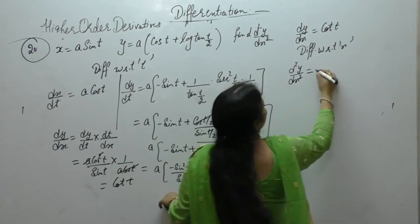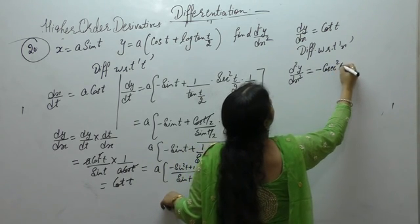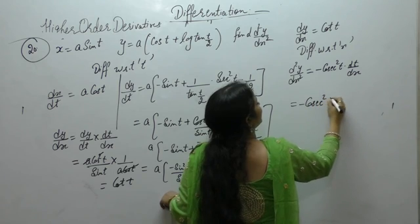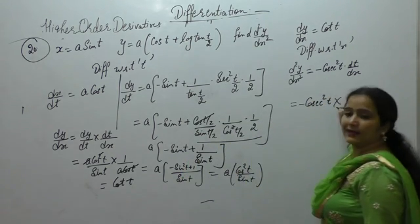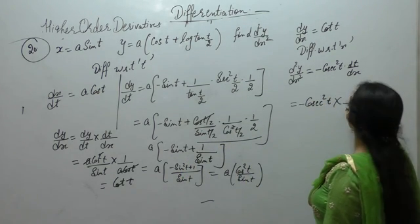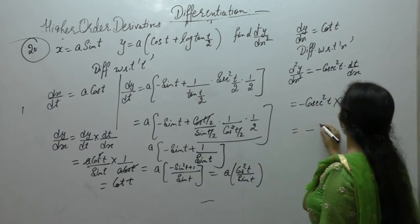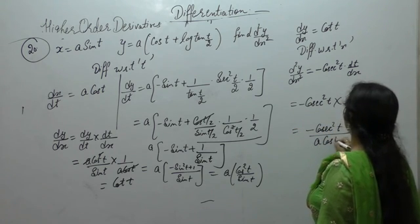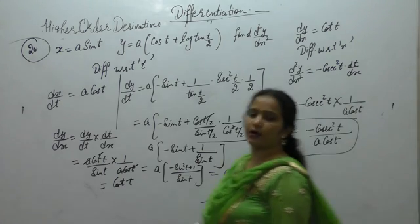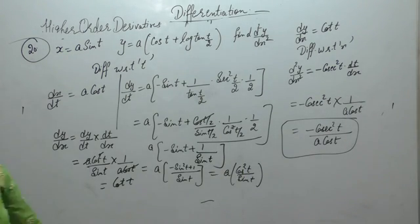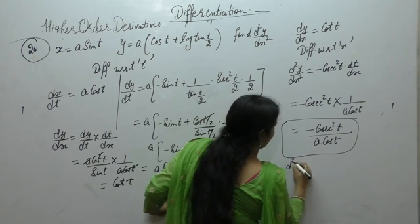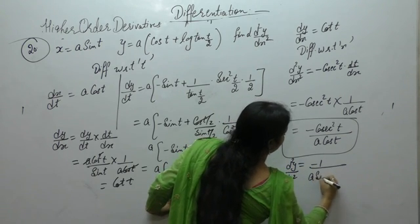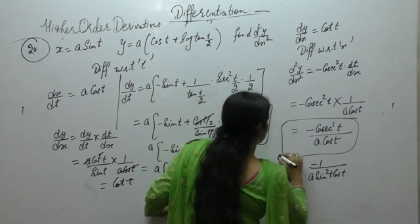Now differentiate with respect to x: d²y/dx² is derivative of cot t, which is minus cosec²t, times dt/dx. Since dx/dt equals a cos t, dt/dx equals 1 upon a cos t. So d²y/dx² equals minus cosec²t upon a cos t. We can also write cosec²t as 1 upon sin²t, giving minus 1 upon a sin²t cos t.